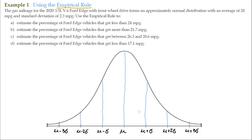If 68% of the data falls within one standard deviation from either side of the mean, and these are all even increments, that means this side is 34% and this side is 34% — together that's 68%. From here all the way to two standard deviations is 95%, so I add another 27% to the 68%. Half of that is 13.5% on each side.